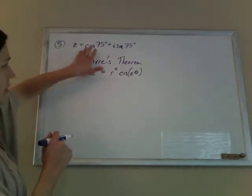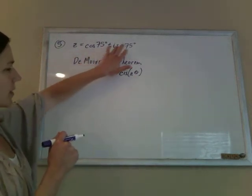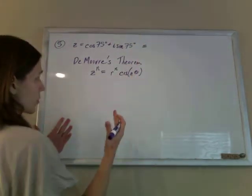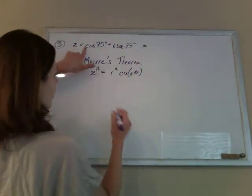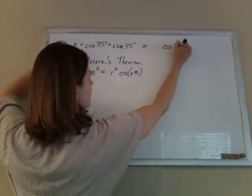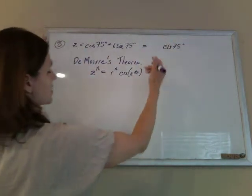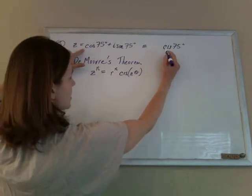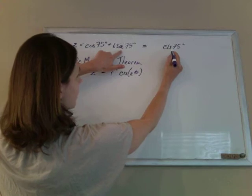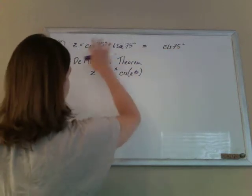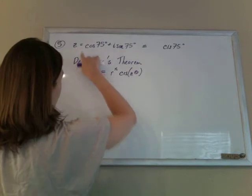All right, so we're given z equals cosine 75 degrees plus i sine 75 degrees, and a lot of times I like to shorten this. Cosine plus i sine, it's easier to write just cis, right? Some teachers don't like it, but it is commonly accepted. You've got cosine i sine, and then the angle is 75, so that notation means that. And there's no coefficient in the front there, so it's just a 1 out here.